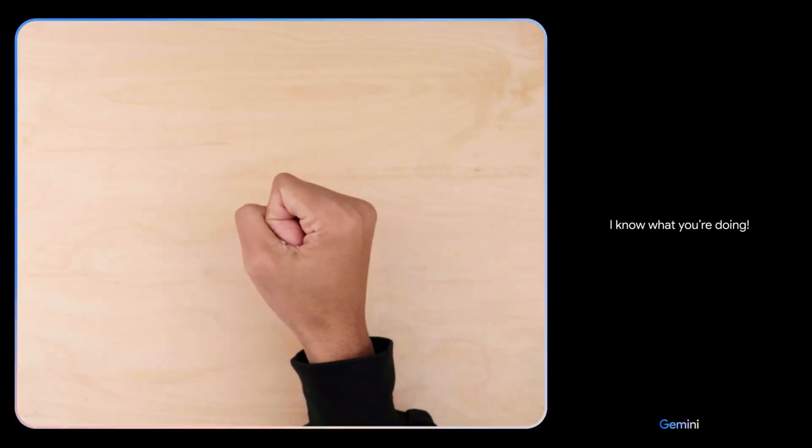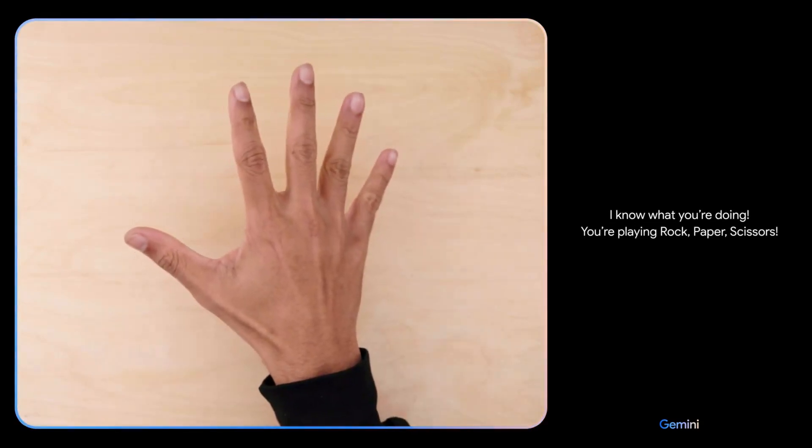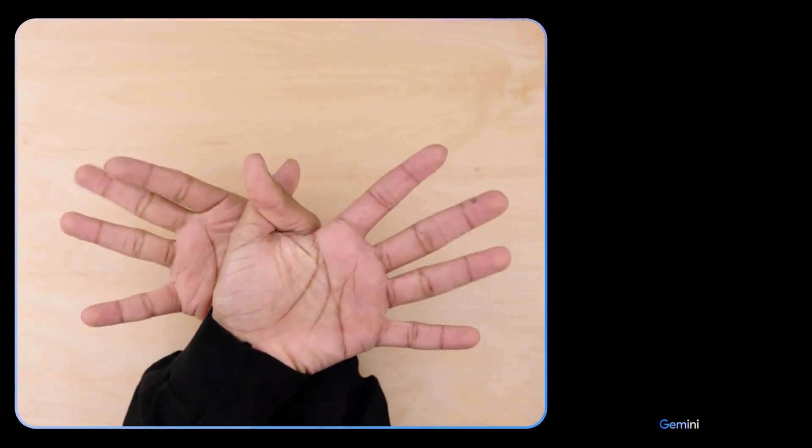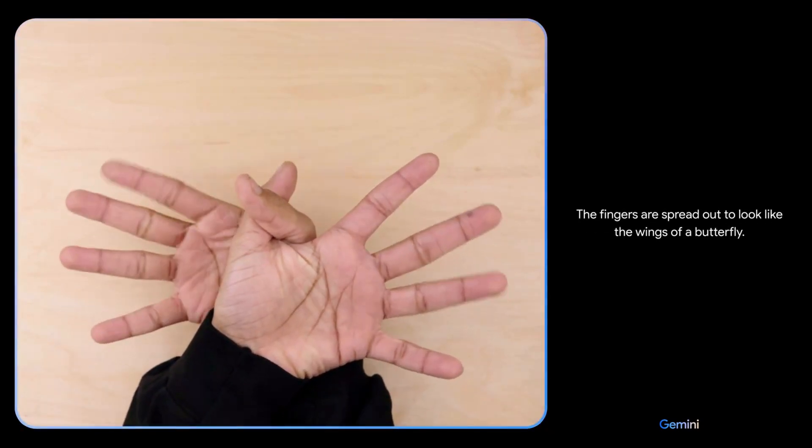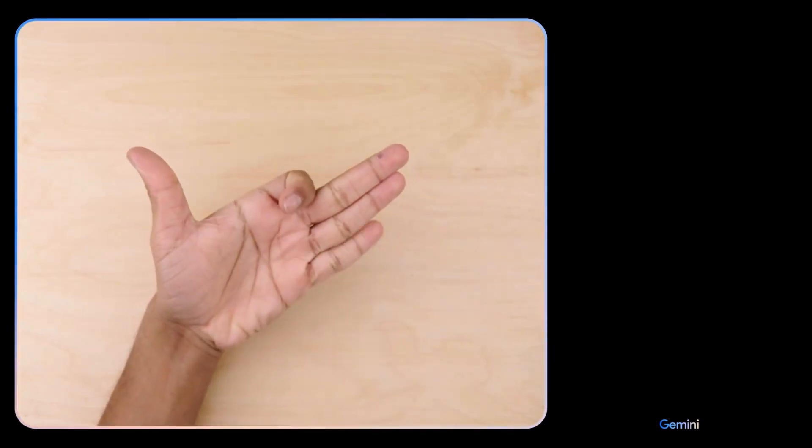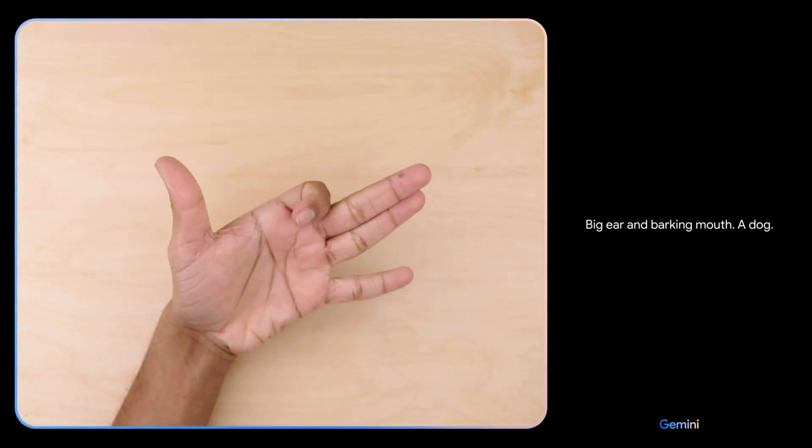I know what you're doing. You're playing rock-paper-scissors. What do you see now? The fingers are spread out to look like the wings of a butterfly. What's this? Big ear and barking mouth. A dog. Sweet!